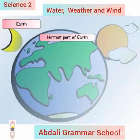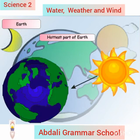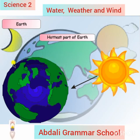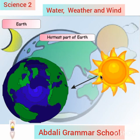The hottest part of the earth is near the middle. This is because the middle parts of the earth get more heat from the Sun.